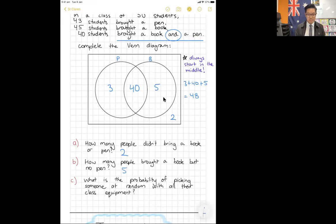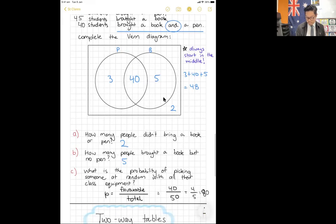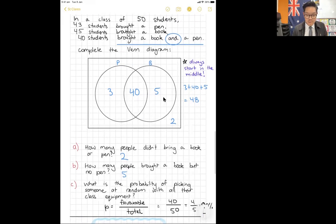Now the last question here, and I want you to see what's different between question A, B, and C. This one says: what is the probability of picking someone at random with all their class equipment? This is different from A and B because A and B were just saying 'how many,' but part C says 'what is the probability.' Now, what is probability? Probability is favorable outcomes over total outcomes. In this case, what's the probability of picking someone at random with all their class equipment? How many people have all their class equipment? That means book and a pen. That's 40 people, so 40 is going to go on top of my fraction. What are we going to put at the bottom? It's going to be the total amount of students. There were 50. So my probability would be 40 out of 50, or if you want to write it in a percentage, it's 80%. Not bad. Should be 100%, but I'll take 80% for now.